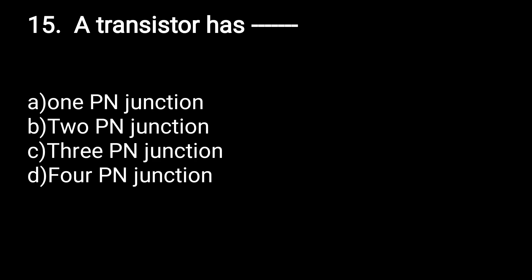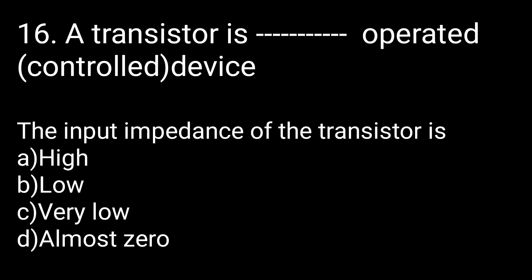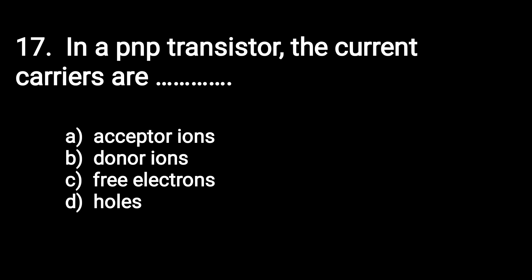Next question: a transistor is a current-operated control device. The input impedance of the transistor is high, low, very low, or almost zero? The transistor is a current-operated control device and the input impedance of the transistor is low.